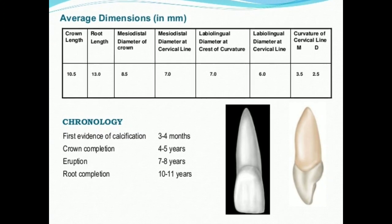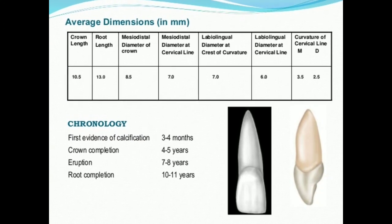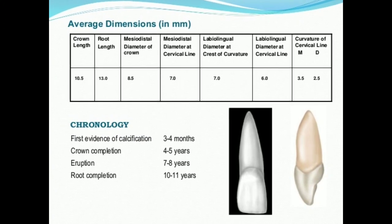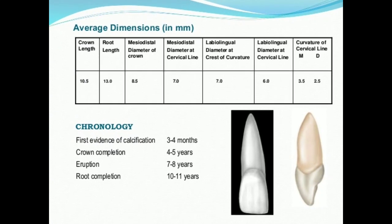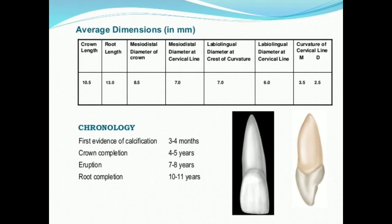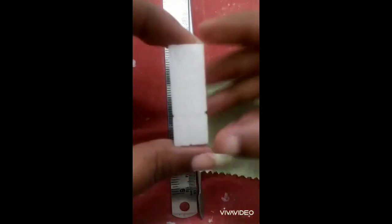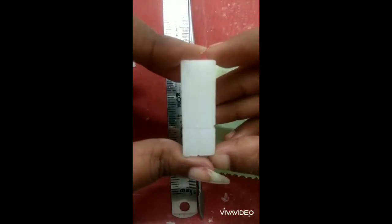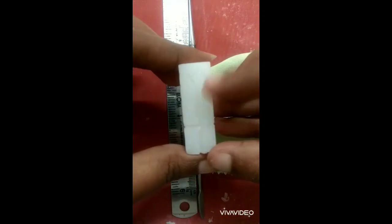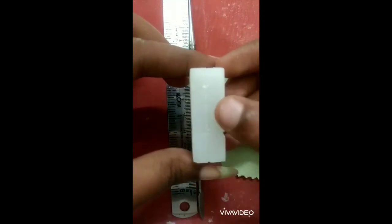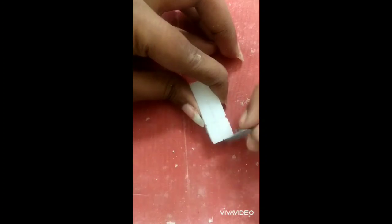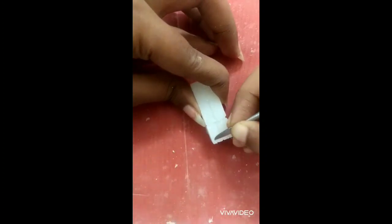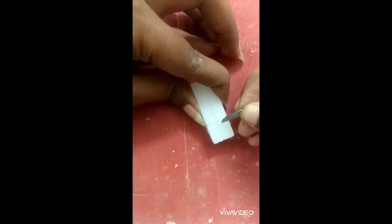We have two dimensions: the crown length is 10.5 mm and the root length is 13 mm. First step — the wax block has four sides: facial, lingual, mesial, and distal. The crown length is 10.5 mm.